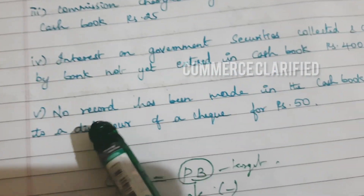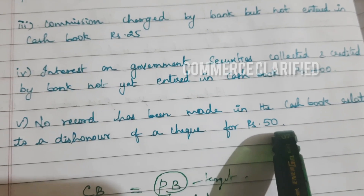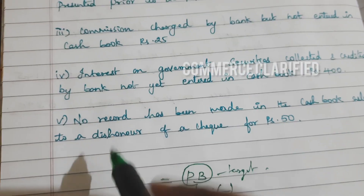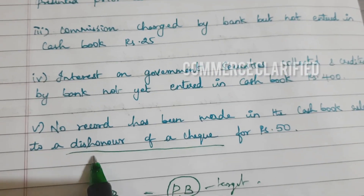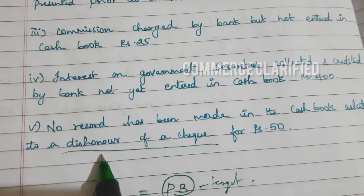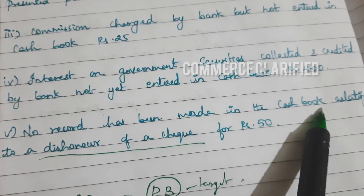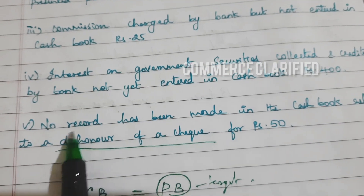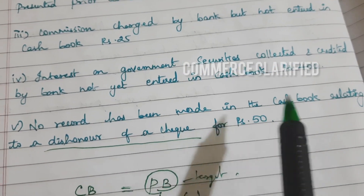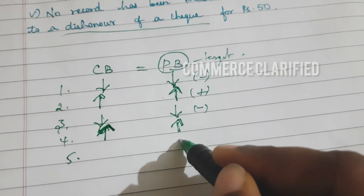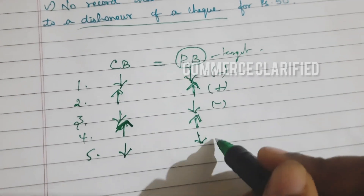Next adjustment: no record has been made in cash book relating to a dishonor of a check for rupees 50. Dishonored check — even after dishonor of the check for rupees 50, we have no record. So cash book near the 50 rupees — detect one.